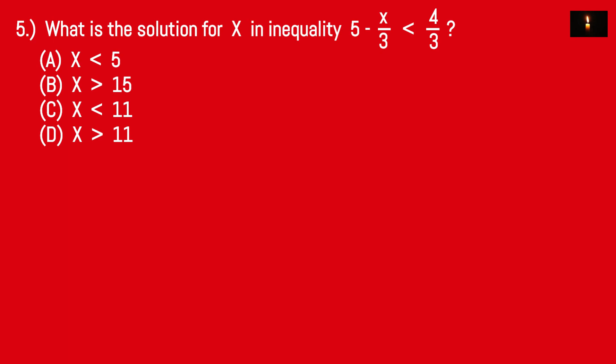Number 2: What is the solution for x in the inequality 5 minus x by 3, less than 4 by 3? This equation is the formula. We can look at x in the table. This equation is equal to minus x by 3, and it is not equal to x. Now we must compare to 4 by 3 minus 5. 4 by 3 minus 5 goes to minus 11 by 3.